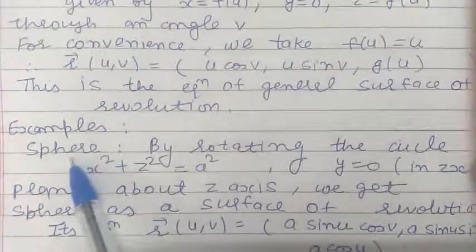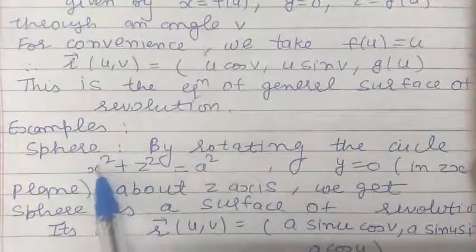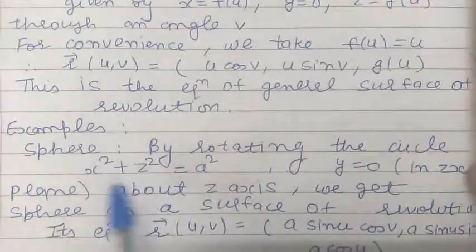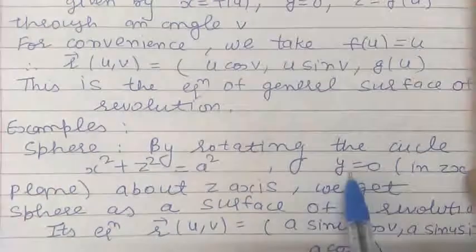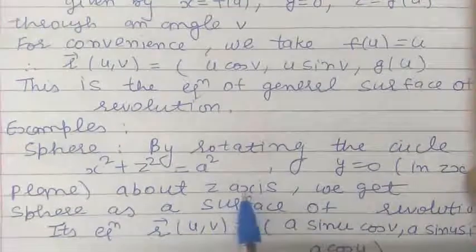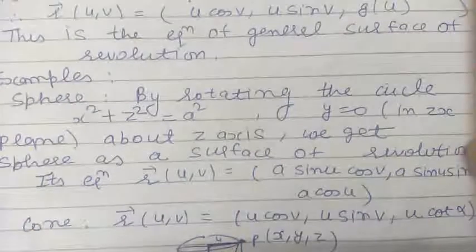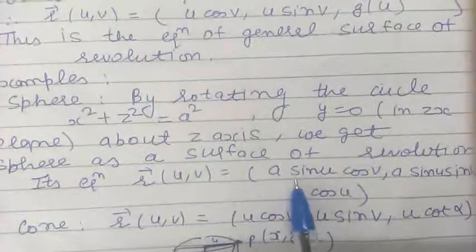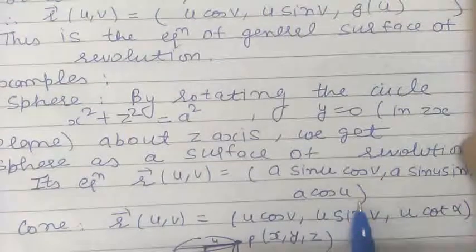Now let us see some more examples. First one is sphere. If we rotate the curve x² + z² = a² in the zx plane about the z axis — this is a curve in the zx plane because y = 0 — we get the surface of revolution as a sphere, and the position vector of the current point on this sphere has coordinates (a sin u cos v, a sin u sin v, a cos u).